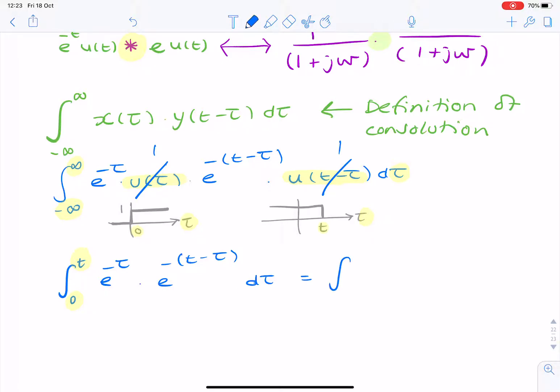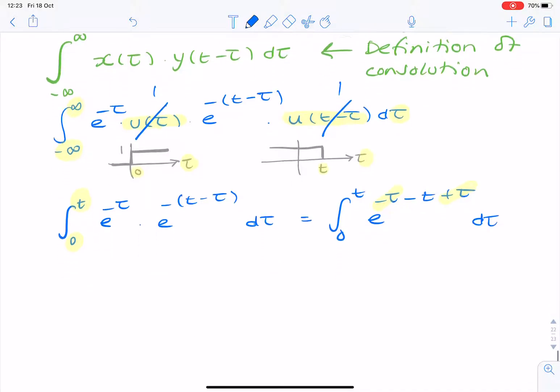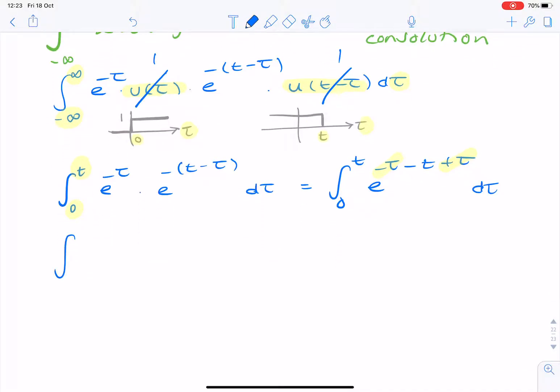So, notice how I replaced the limits from minus infinity to infinity and they became 0 to t. Now, if you simply add the powers of e to the minus tau minus t plus tau d tau. Now, these conveniently add up to 0. So, we're now integrating from 0 to t e to the minus t d tau.